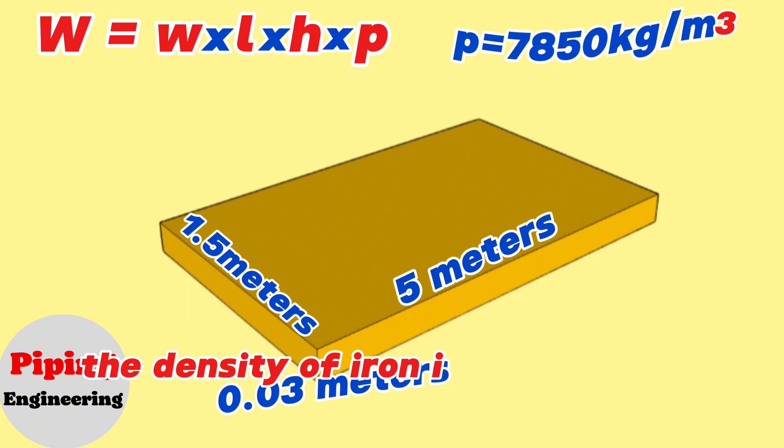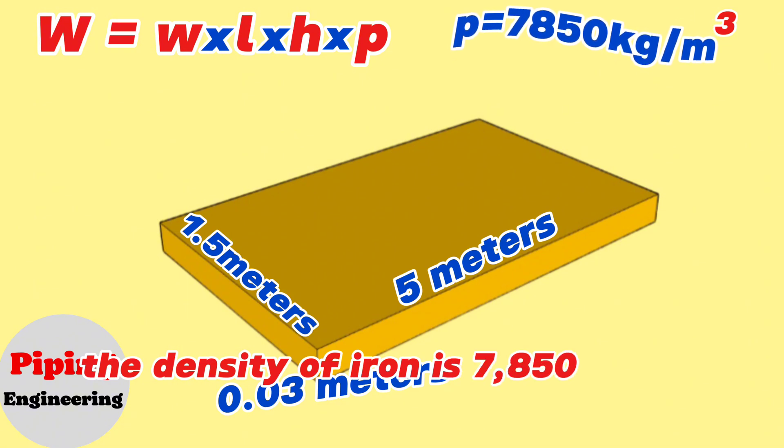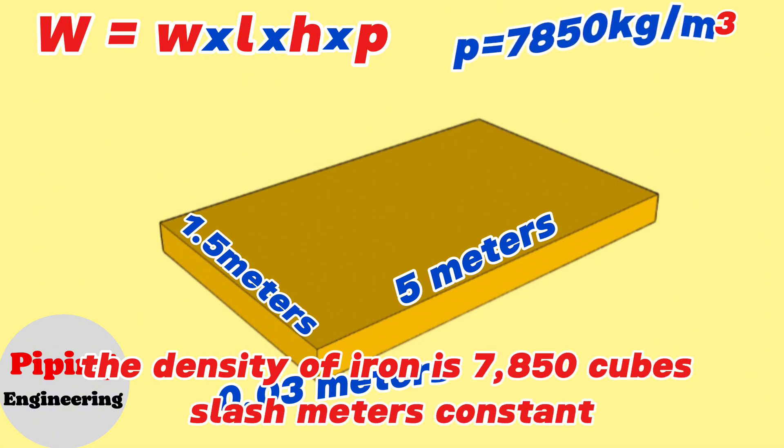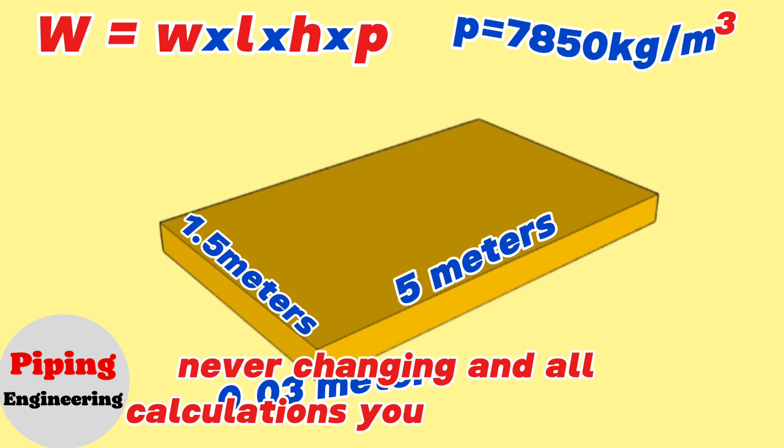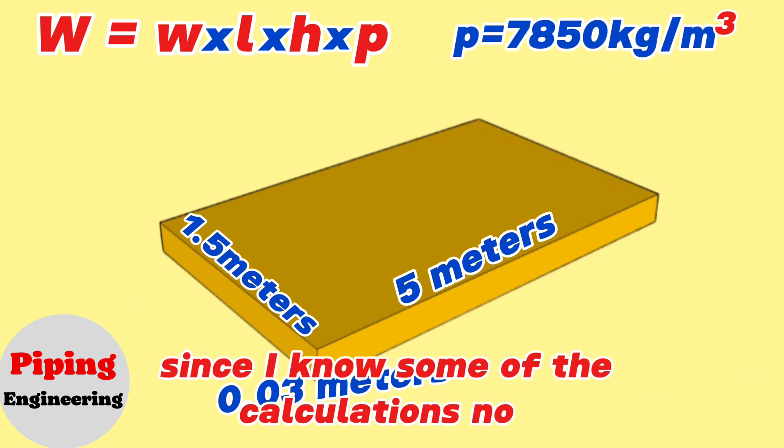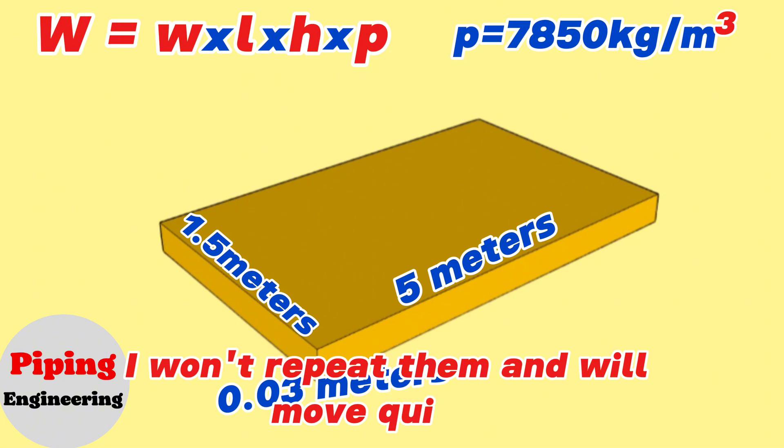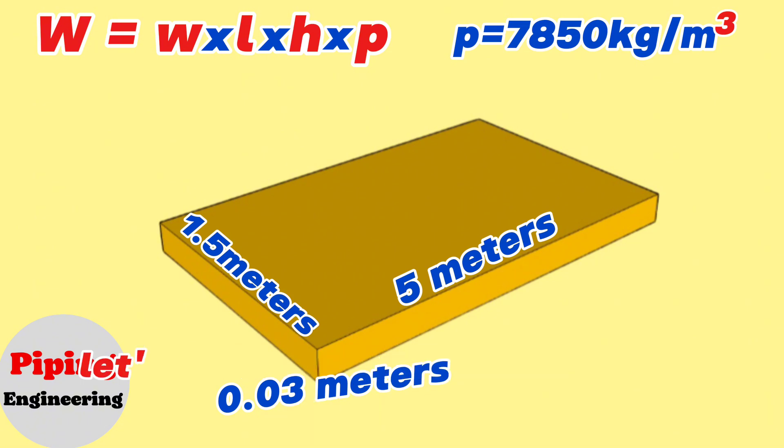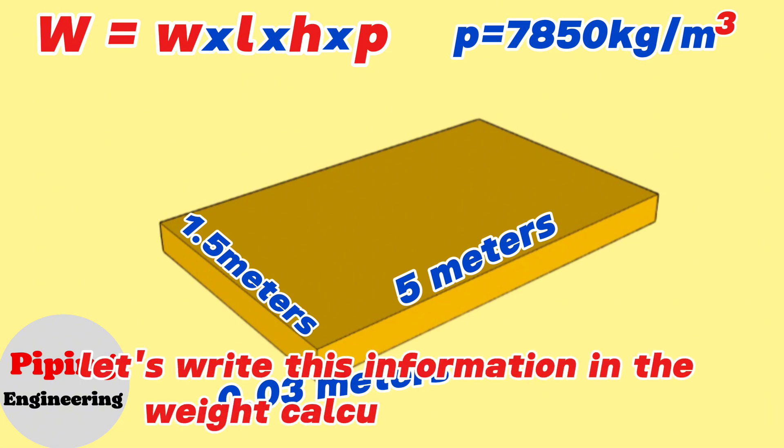The density of iron is 7850 kg/m³, constant, never changing, and in all calculations you will use this. Since I know some of the calculations now, I won't repeat them and will move quickly. Let's write this information in the weight calculation formula.